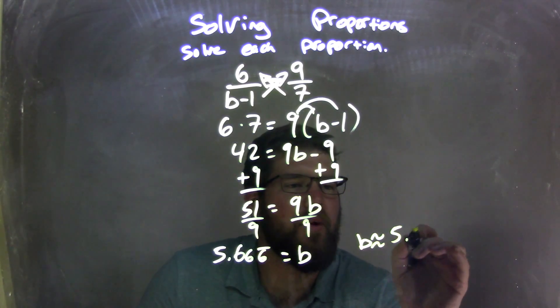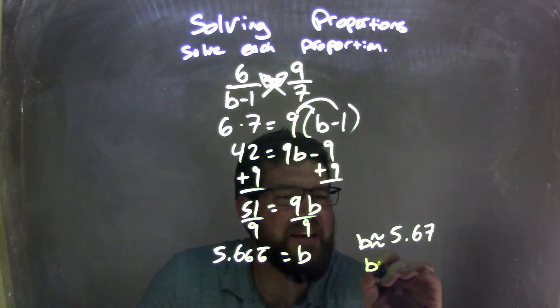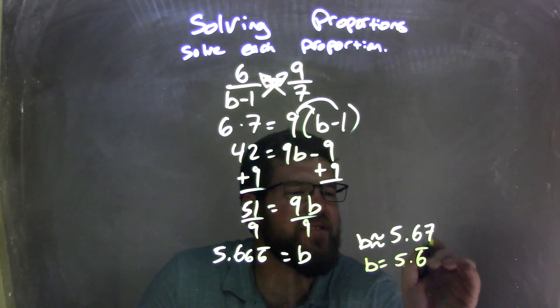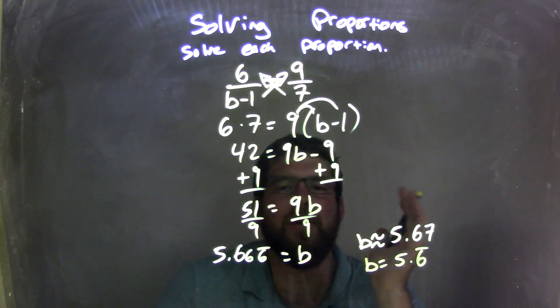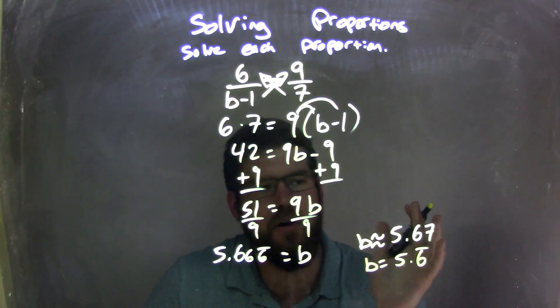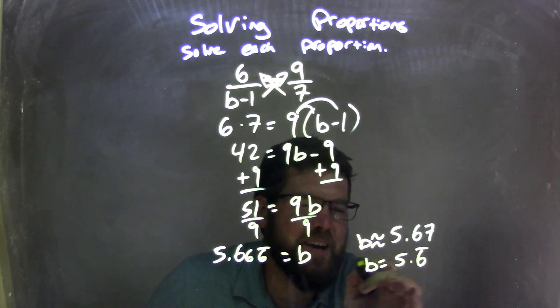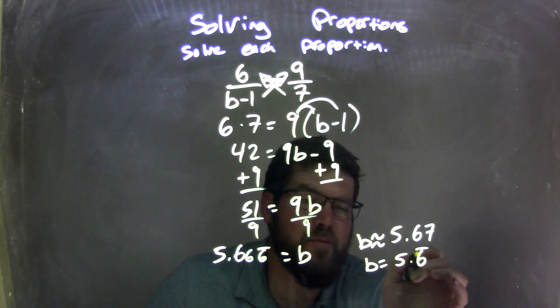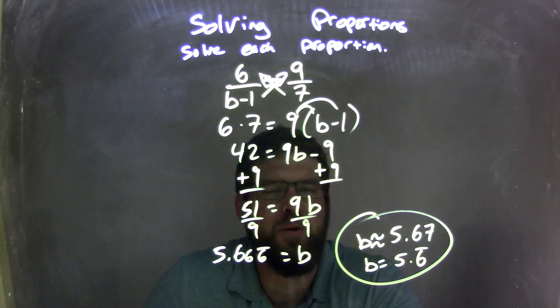So we have b is approximately 5.67, or you can even say exactly b is equal to 5.6 repeating, whatever you prefer. In my opinion, if your teacher is really strict and says round to the nearest hundredth, that's fine, you can do that there. But I actually like it when it's more perfect, like that's the real answer, 5.6 repeating. Well, either way, that works for me here, okay?